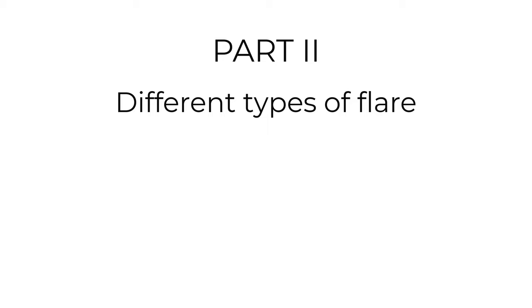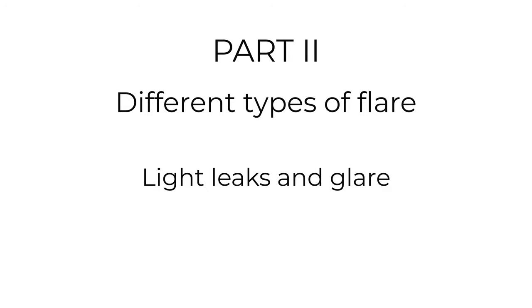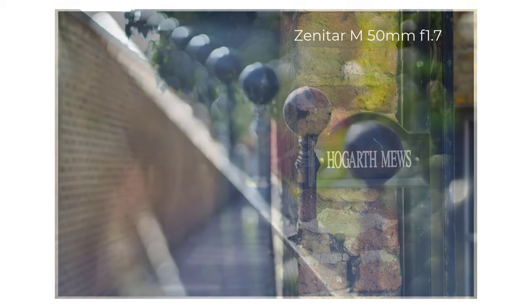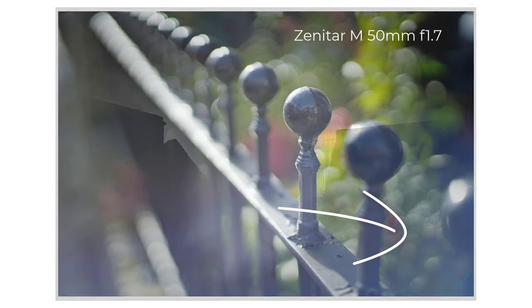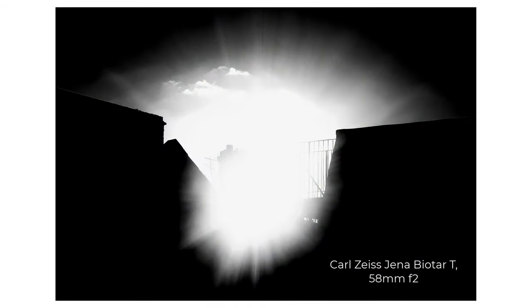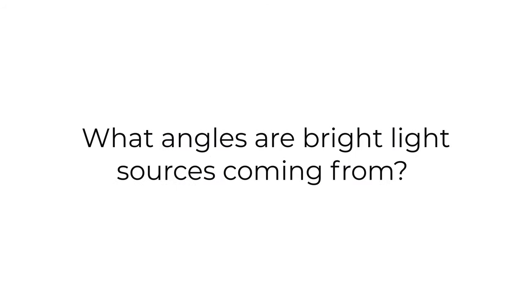You can broadly divide flares into two types: flares that produce light leaks and glare, and flares that produce distinctive lines, shapes and alien-looking objects. Light leaks are lighter patches appearing on the image — often some bright light is hitting the lens from an angle — while glare is caused more by head-on bright light. The angle that light hits and enters a lens has a big impact on the type of flares you see. Critically, bright light sources don't actually need to be in a lens's field of vision to cause flare — they can be off to the side.